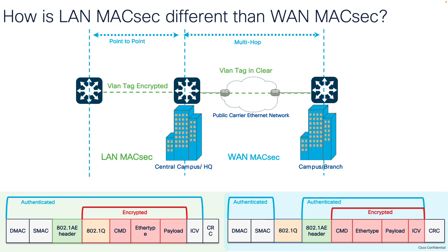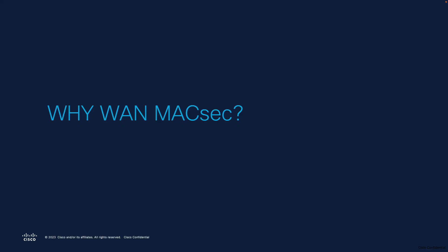Looking at how they handle VLAN tags: LAN MACsec secures both the data payload and the VLAN tag, which works well in single-hop or point-to-point scenarios. In WAN MACsec, however, we have the capability to keep the VLAN tag in clear, thereby enabling data to pass through via your public transport or public carrier Ethernet networks.